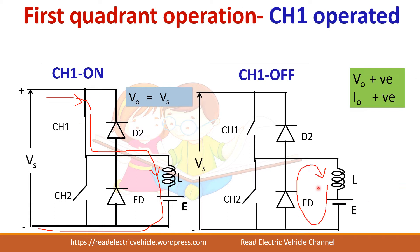When Chopper 1 is turned off, the current through the inductance cannot change its direction immediately, so it continues to flow in the same direction. The freewheeling diode carries the load current. Since load current freewheels, output voltage is zero but current remains in the same direction, so I-naught is positive.